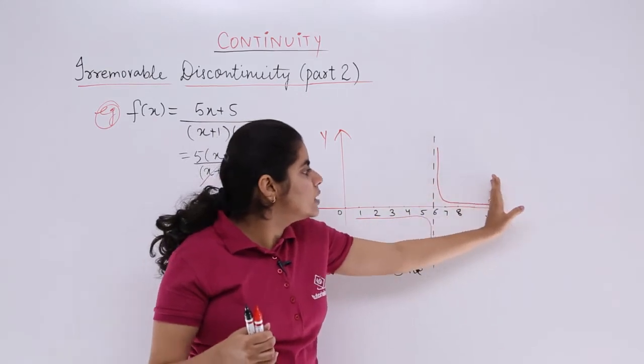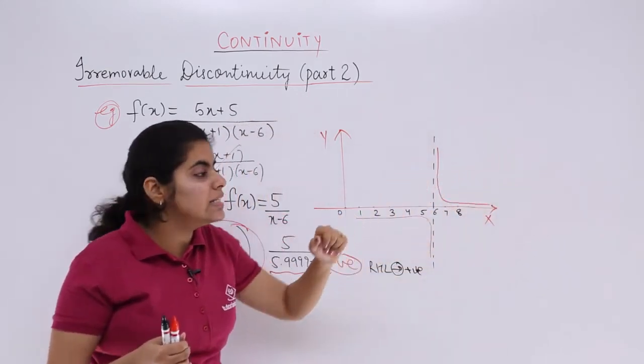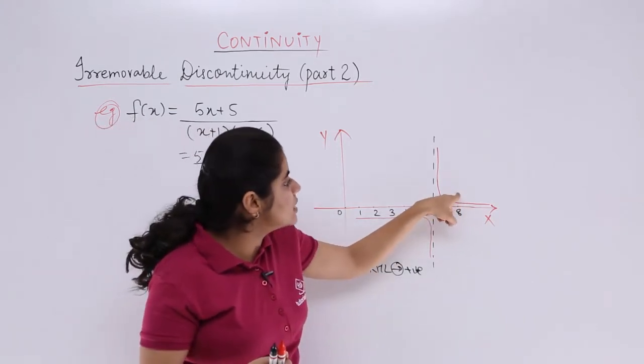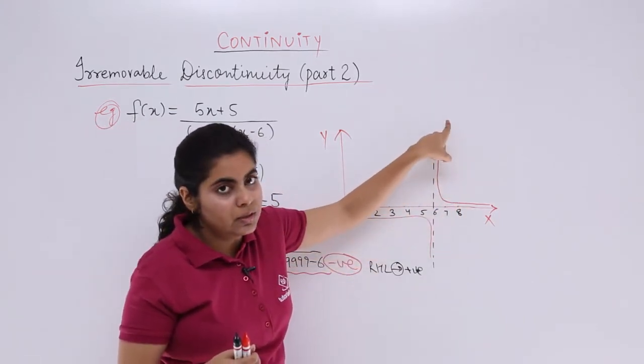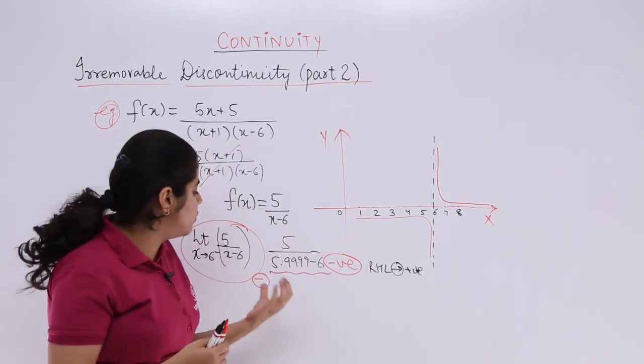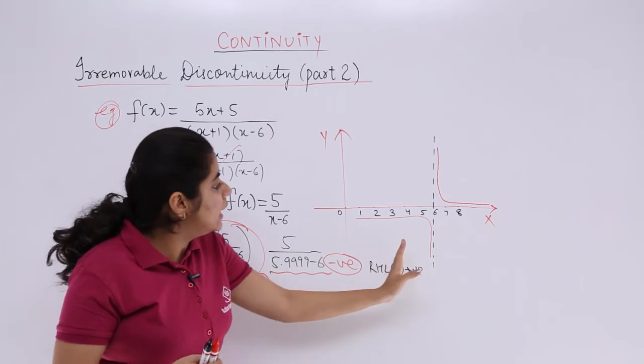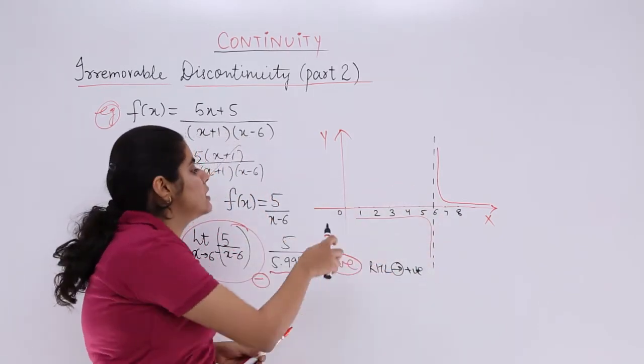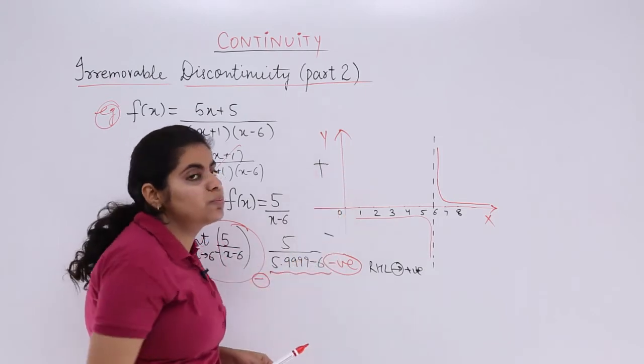So basically you are going towards the positive, and since it is actually reaching infinite or indeterminate, so you have something called as the asymptotes. And what about having LHL? LHL means negative. LHL means getting negative. Negative means that is why we are going downwards. The y-value downwards is negative. Upwards is positive.